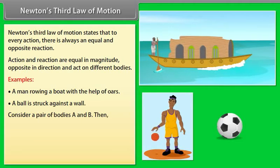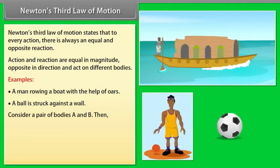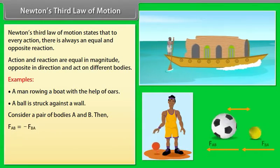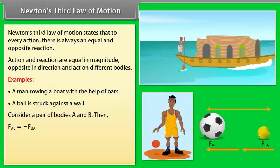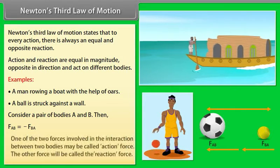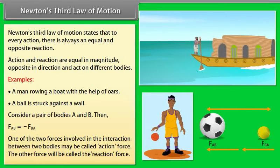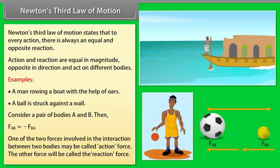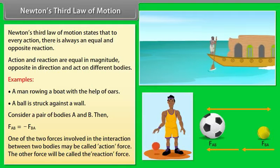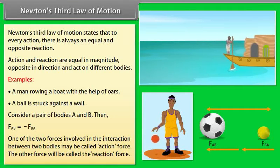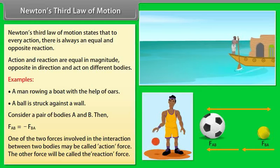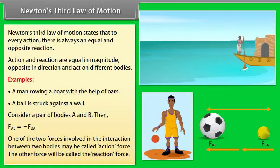Consider a pair of bodies A and B. Then F_AB = −F_BA. One of the two forces involved in the interaction between two bodies may be called the action force; the other force will be called the reaction force.